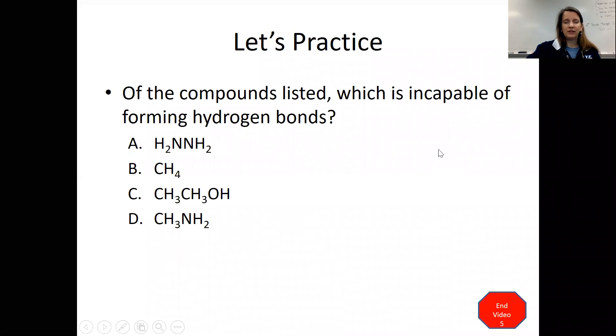Next question, of the compounds listed, which is incapable of forming hydrogen bonds? So first off, in letter A, we see that there's nitrogen and hydrogen together. So that would be creating a hydrogen bond with a nearby H2NNH2 molecule. B, there's no nitrogen, oxygen, or fluorine. So this cannot have hydrogen bonds.